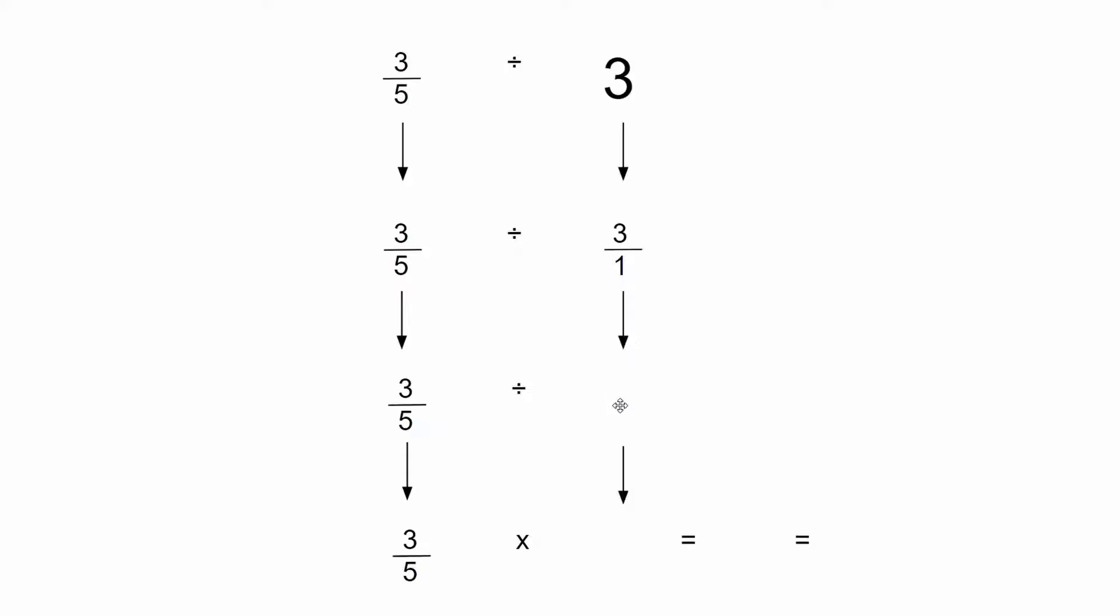The next step is flipping the numerator and the denominator on my second fraction in my calculation. So three over one becomes one over three.